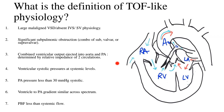The fourth point is that ventricular systolic pressures are at systemic levels. Because the VSD is so large, the RV and LV communicate freely, have equal systolic pressures, and these are determined by the aortic systolic pressure. Since the pulmonary artery is obstructed, it does not influence the systolic pressures of the two ventricles. The PA pressure is usually less than 30 mmHg — typically in the range of 15 to 25 mmHg.